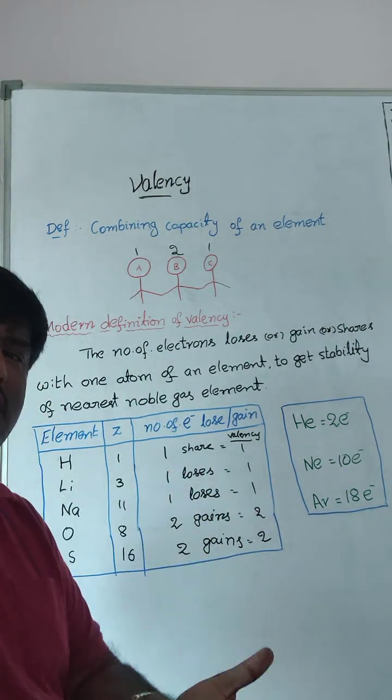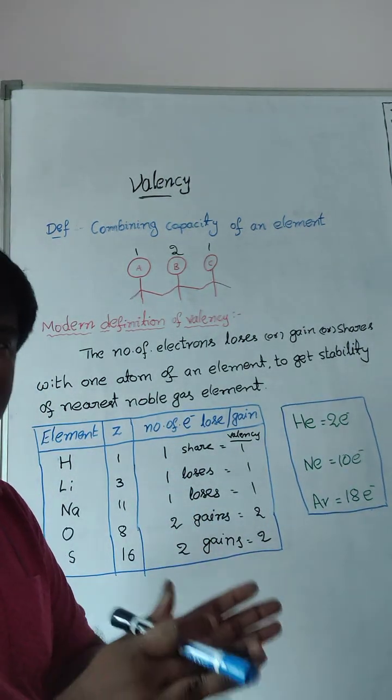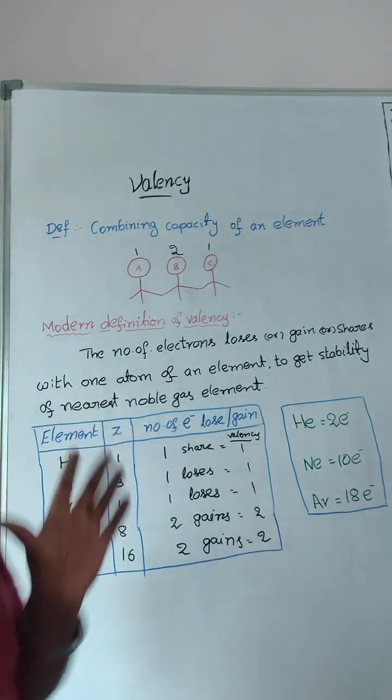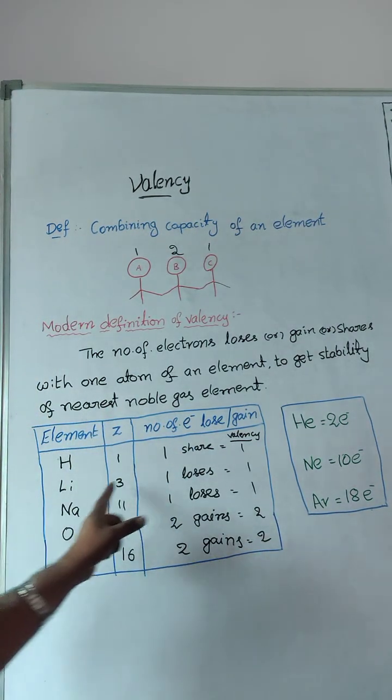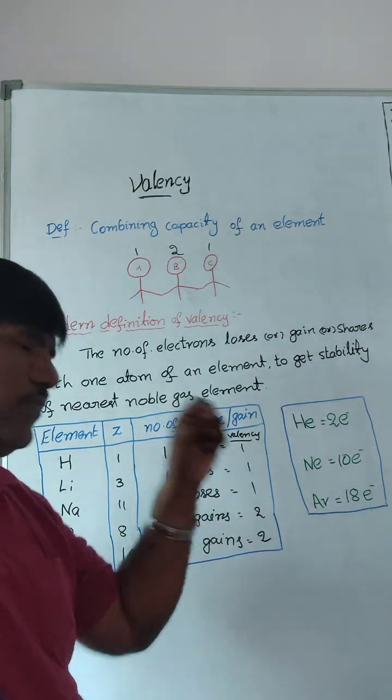So, how many electrons lost, how many electrons gained, how many electrons shared, that is only valency. Lithium will lose one electron, so valency is one.